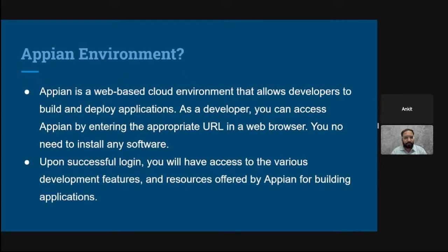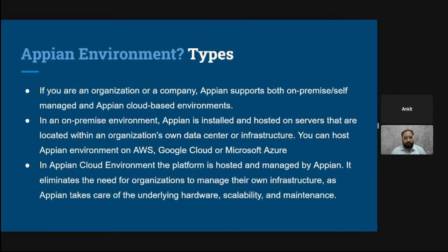Once you log in, you will be able to see multiple components and features that we will discuss later. Now the second point is Appian environment types. Appian supports both on-premise — also called self-managed — and Appian cloud-based environments. In an on-premise environment, Appian is installed and hosted on servers located within an organization's own data center.